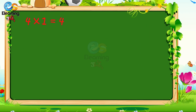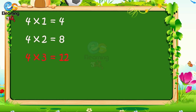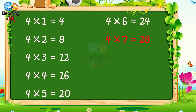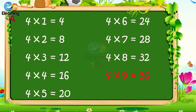4 1s are 4. 4 2s are 8. 4 3s are 12. 4 4s are 16. 4 5s are 20. 4 6s are 24. 4 7s are 28. 4 8s are 32. 4 9s are 36. 4 10s are 40.